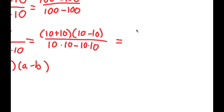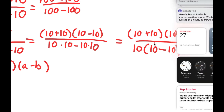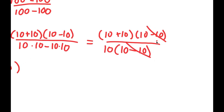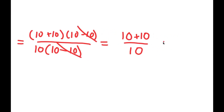Now this is the same thing as 10 plus 10 times 10 minus 10 over — for my denominator, I'm going to factor out 10. So if I factor out 10, I get 10 times — well, 10 times 10 divided by 10 is simply 10, and again 10 times 10 divided by 10 is 10 again. So I have 10 times 10 minus 10. From here, what I'm going to do is cancel out these two 10 minus 10s. So if I cancel these two out, I get 10 plus 10 over 10. And 10 plus 10 is 20, so I have 20 over 10, and 20 divided by 10 is 2.